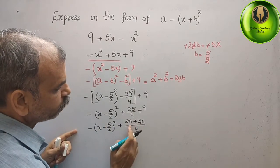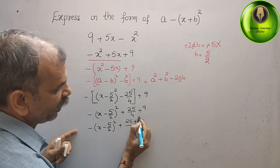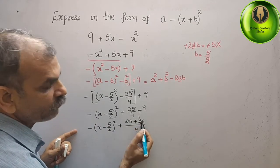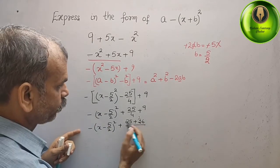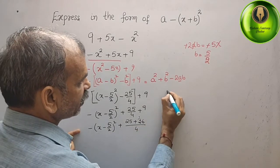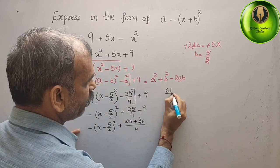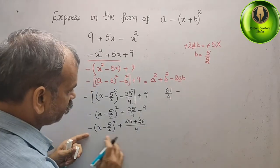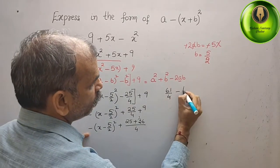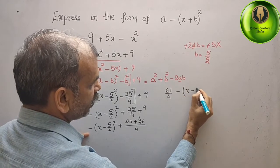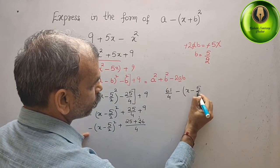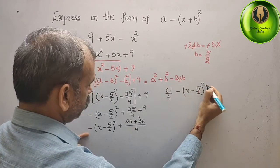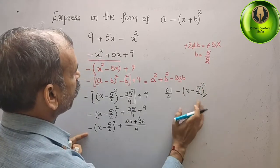What you will get? 6 plus 5 is 11. 1 carry 61. We will get 61 by 4 minus x minus 5 by 2 whole square. This is your answer.